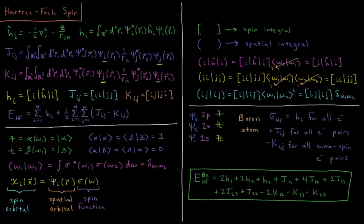Instead of spatial orbitals psi_i depending only on spatial coordinates, we now have spin orbitals depending on x, y, z and the spin variable sigma. A spin integral uses bracket notation, while a spatial integral — where spin has been integrated out — uses parentheses notation. We want to integrate out spin and work only with spatial integrals moving forward. The spatial one-electron integral equals the spin integral times the spatial part times the spin integration; since both spin functions belong to the same electron, the spin overlap is 1, so all one-electron integrals survive.